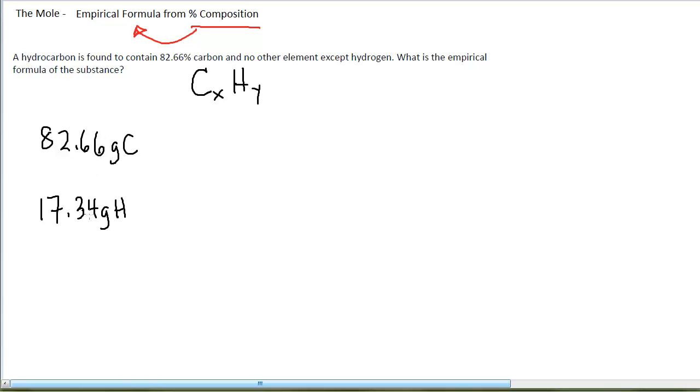Watch your sig figs. Both of these, these were found by subtracting the 82.66 from 100. And so I have two decimal places. My strategy is that I go from grams to moles and moles to ratios. You might want to keep that in mind.